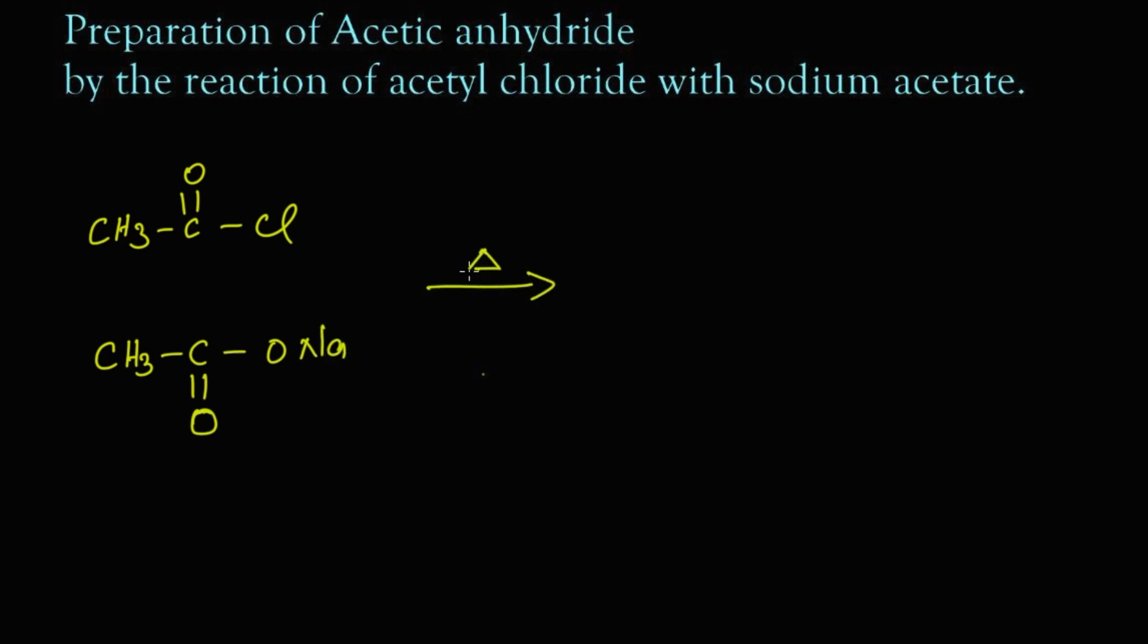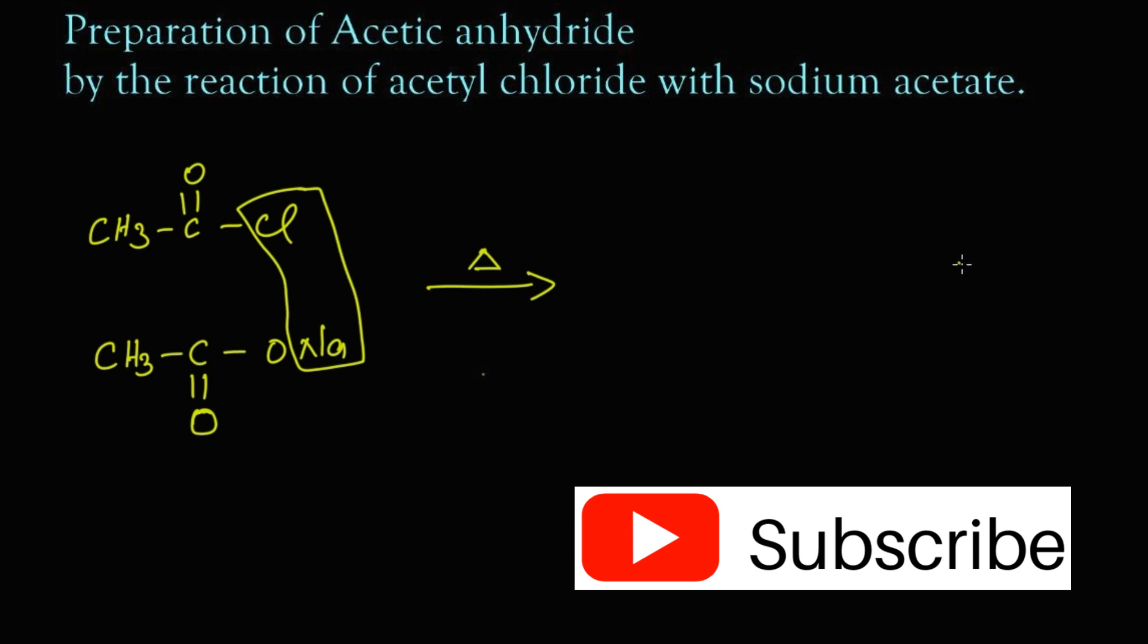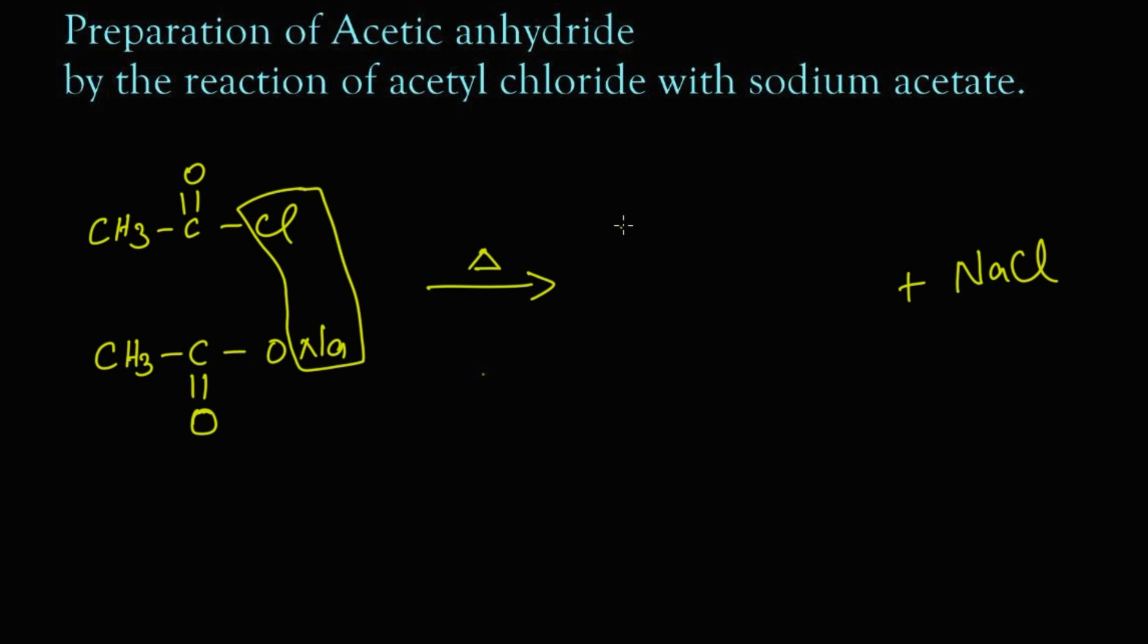On heating this mixture, the Cl and Na will leave as NaCl, that is sodium chloride. The remaining parts will get attached: CH3-C=O-O-C=O-CH3. Let's write the name for these structures.